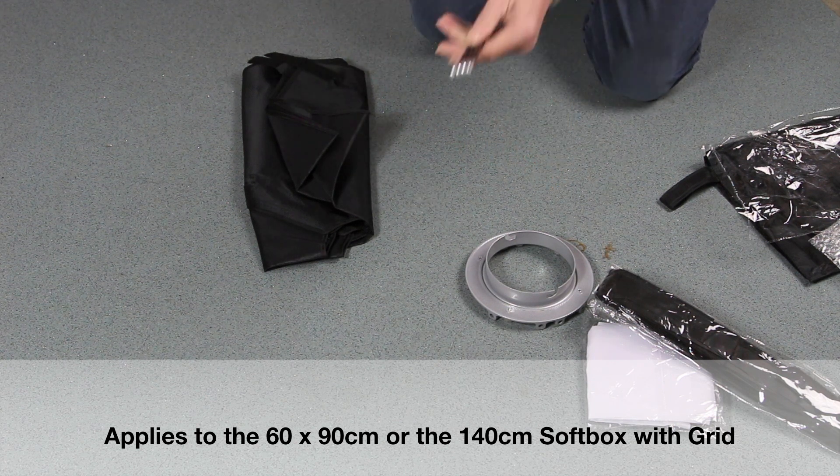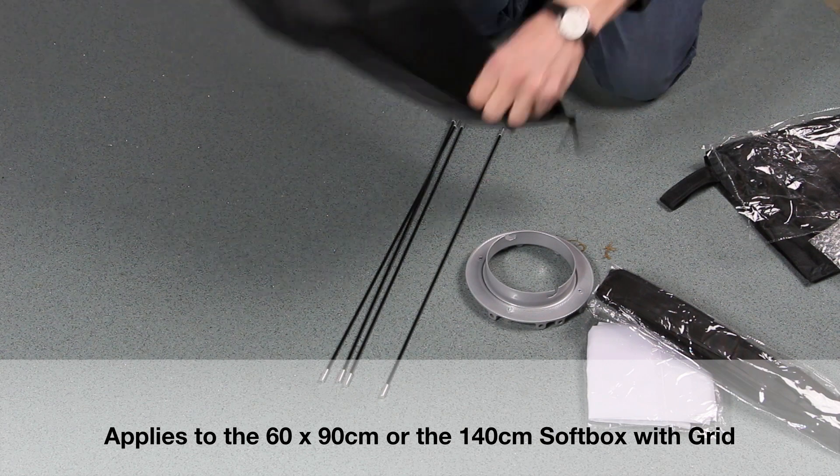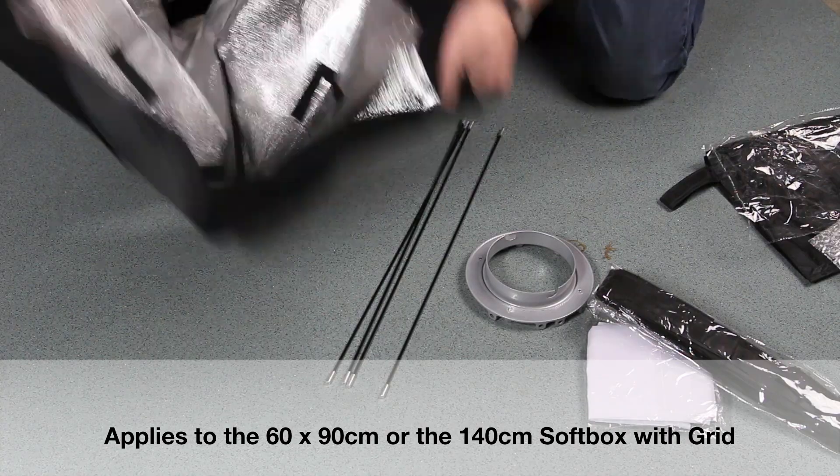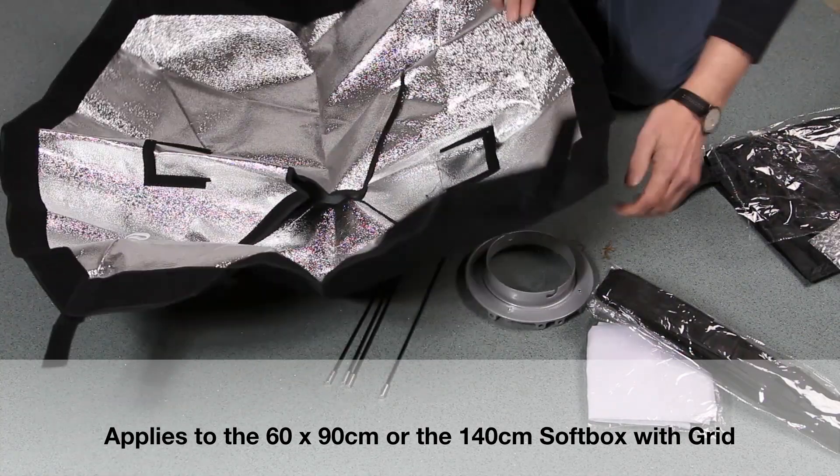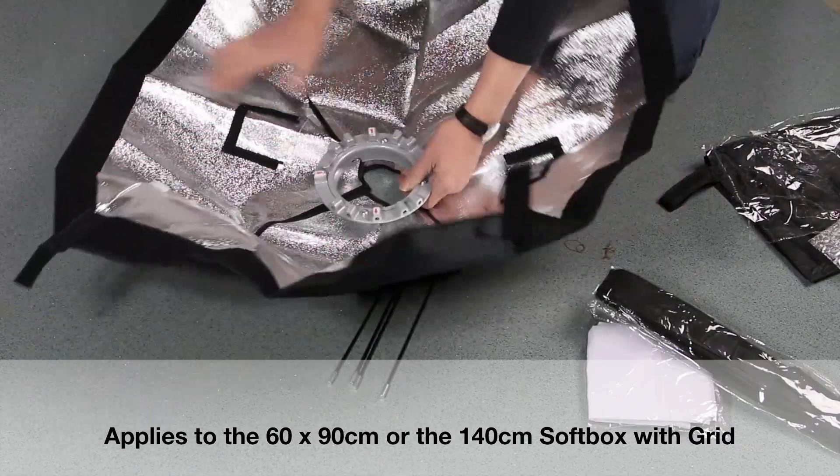You start by taking the rods out and opening the cover up. The speed ring comes in either Bowens fit or Elinchrom fit. Take the speed ring and put the speed ring in.